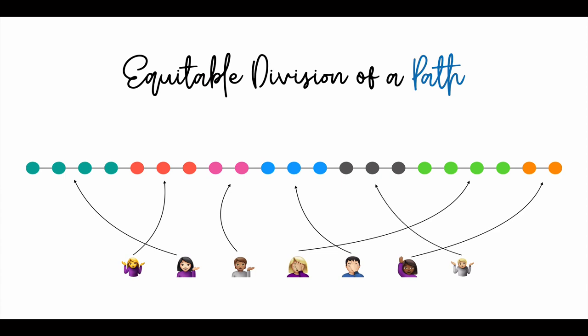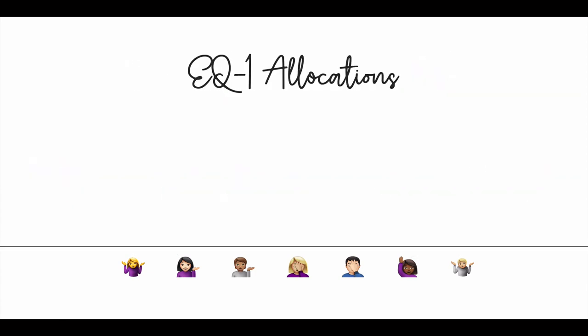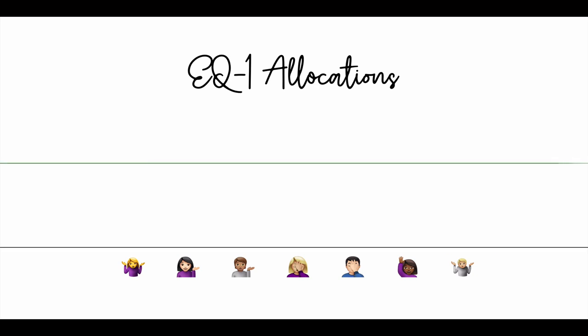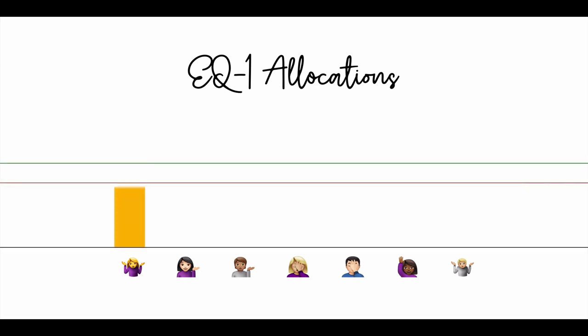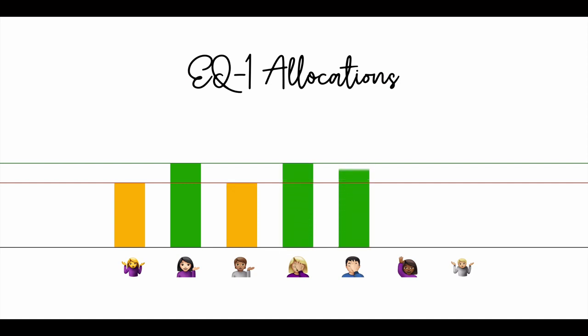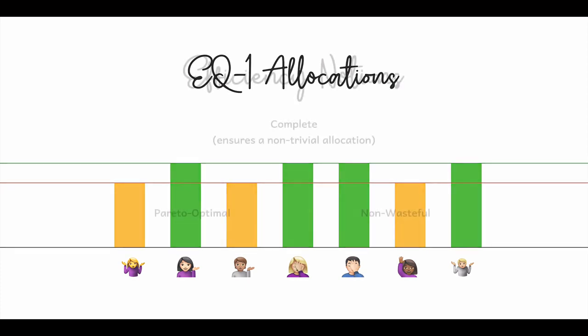We also consider EQ1 allocations, which is very similar to an equitable allocation, except that you allow to be off by one. There end up being two utility thresholds which are off by one and every agent has a value that is one of these utilities.